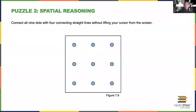Take a look at the second puzzle. This is a spatial reasoning puzzle and the rule is very simple — just one sentence. The challenge is to connect all nine dots with four connecting straight lines without lifting your cursor from the screen. The key is four connecting straight lines that go through all nine dots.